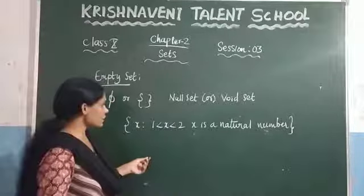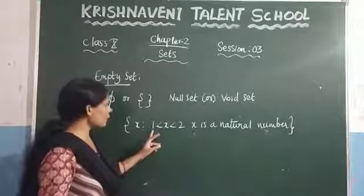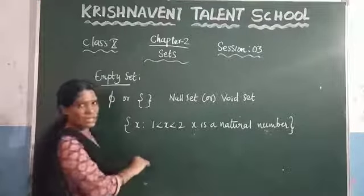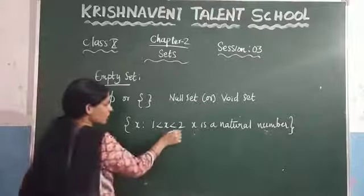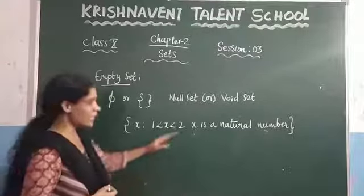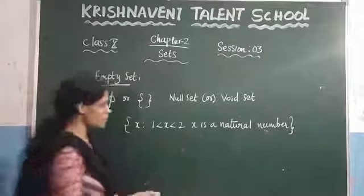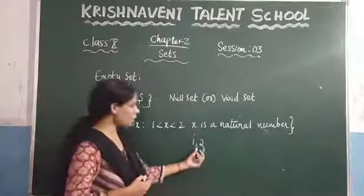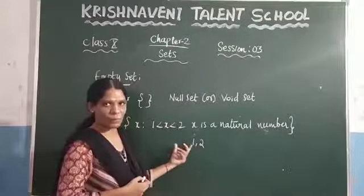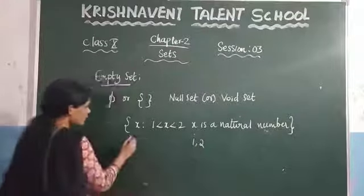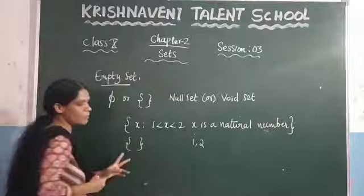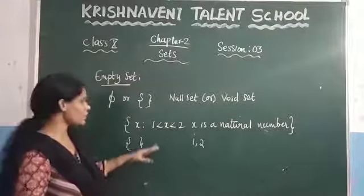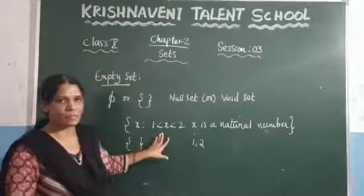This set indicates you need to write what elements lie between 1 and 2 that are natural numbers. You know that natural numbers go 1, 2, and there is no natural number strictly between 1 and 2. So you can observe that no elements will be there in this set, and we represent it as an empty set.